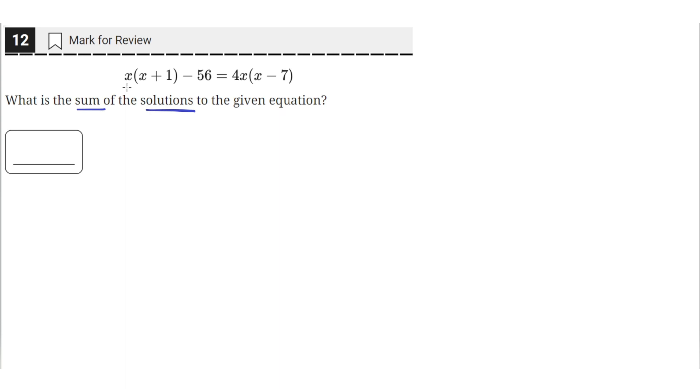We can solve this by first moving everything to one side. But before we do that, we need to expand out this parentheses by distributing the x. So x times x is x squared, x times 1 is x, and then minus 56, which equals... 4x times x is 4x squared.